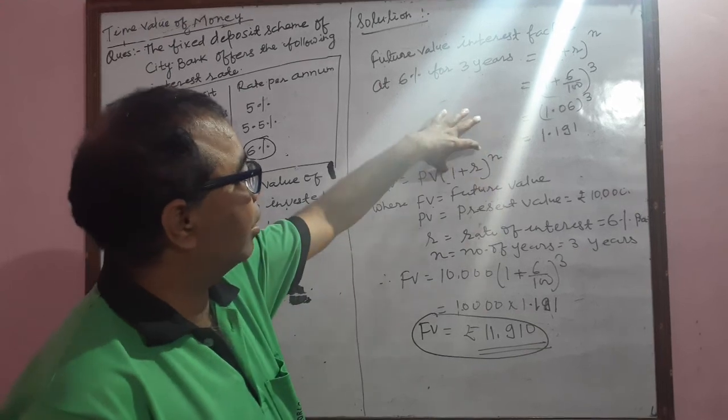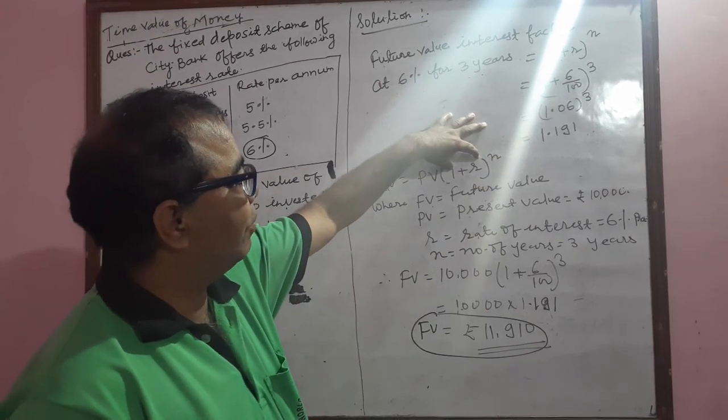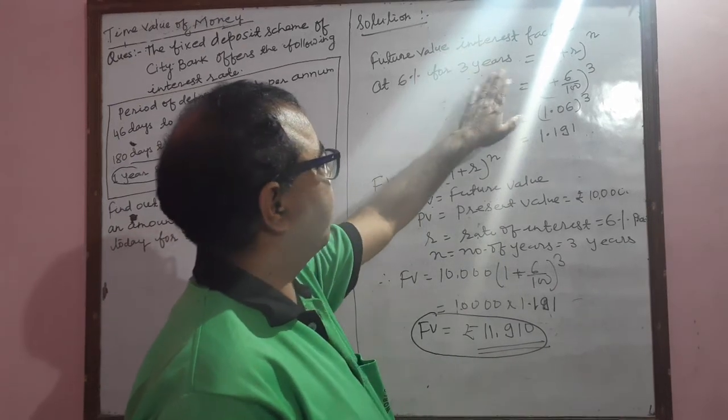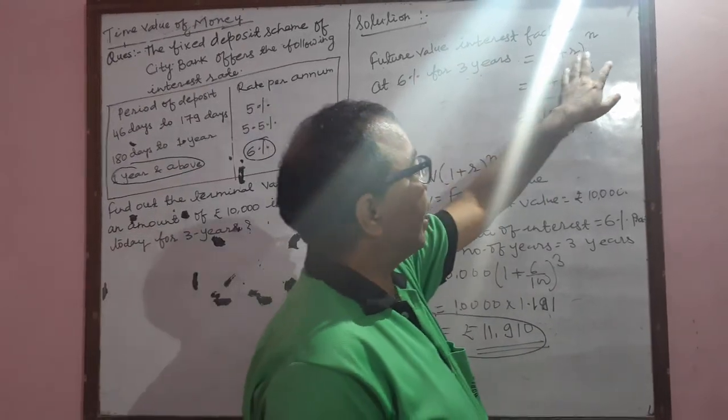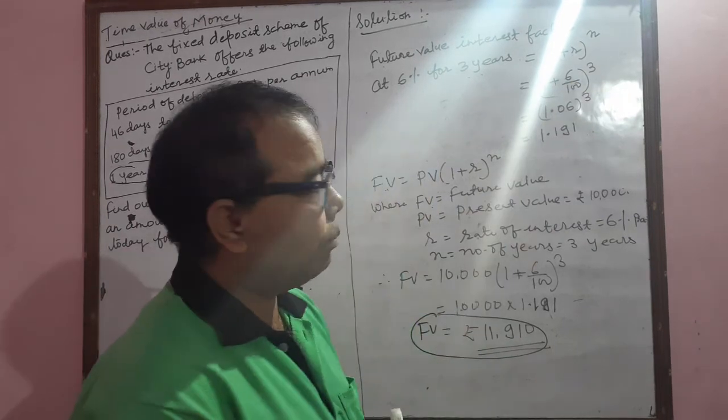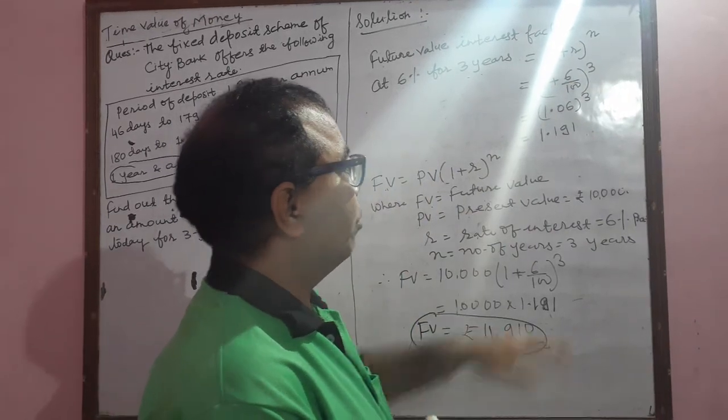This is called the interest factor for the future value. So the future value interest factor at 6% for the next three years is (1 + r) to power n, so (1 + 6/100) to power 3, which is 1.06 to power 3, equals 1.191.